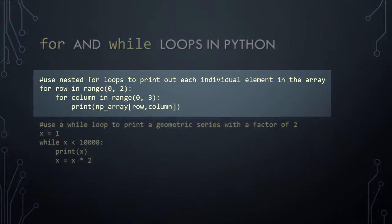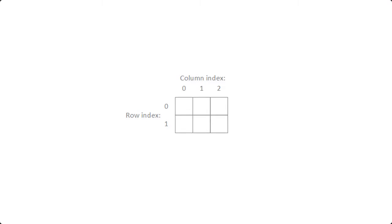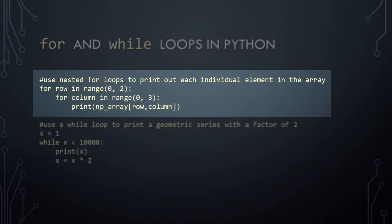This next example demonstrates how loops can be nested in Python. With nested loops, one loop, called the inner loop, runs inside of another loop, called the outer loop. More specifically, the entire inner loop will run once for each iteration of the outer loop. In this example, the outer loop will iteratively fill a variable named 'row' with integers ranging from 0 to 1, while the inner loop will iteratively fill the variable 'column' with integers ranging from 0 to 2. These two sets of numbers correspond with the row and column indexes for our two-dimensional numpy array. When this loop runs, it will print out all elements in the first row of the array, followed by all elements in the second row.